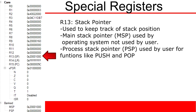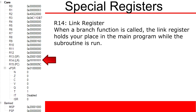R13 is considered the stack pointer register. This register actually contains two different pointers. The first pointer is the main stack pointer, and is used by the operating system to manage its own stacks. The other pointer is the process stack pointer, and this can be used by the user or developer inside functions like push and pop. For example, if I was to push a value onto the stack, the top value of that stack would be pointed to by the process stack pointer.